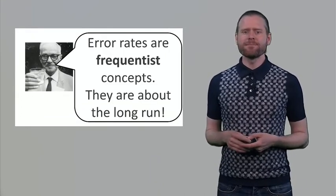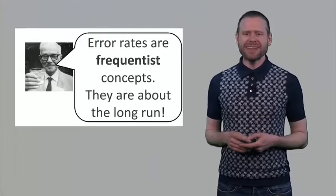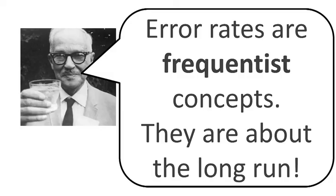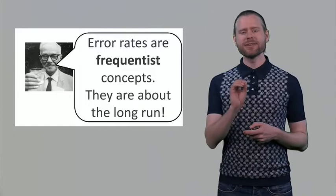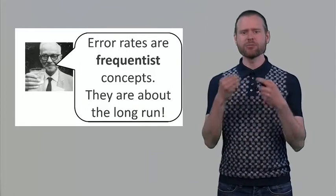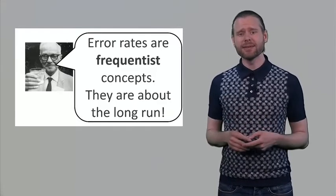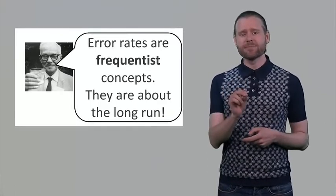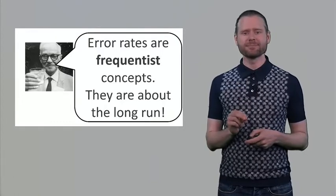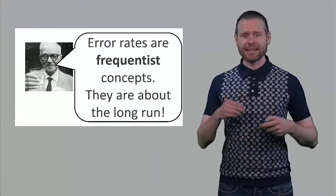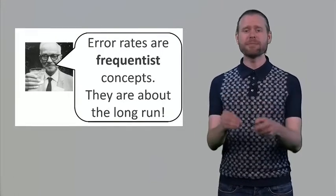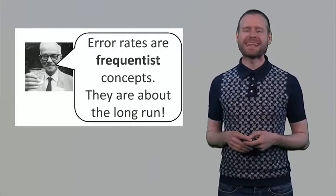Now remember that Neyman thinks that these error rates are frequentist concepts, so they apply to the long run. In any single study there is either a true effect or not — you are right or you are wrong. But these error rates are about long run frequencies. So you can make a mistake 5% of the time, but in any single study you have either made a mistake or not. It is important to think about this in the long run: if we do many many studies, how often will you make an incorrect conclusion?